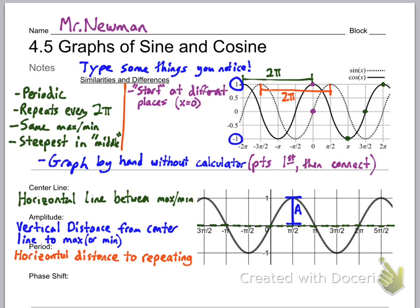The period is the horizontal distance until the graph repeats itself — in other words, how far you go to the right until you're back to where you started. You can measure it from maximum to maximum, and on this graph that is 2π. The phase shift is the horizontal distance to the start, and it depends on whether you're graphing sine or cosine. For this sine graph the phase shift is zero because it hasn't been shifted. If this were cosine, the phase shift would be π/2 because cosine starts when y equals 1.